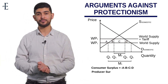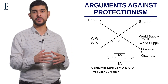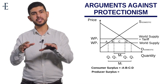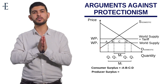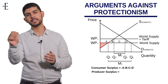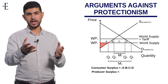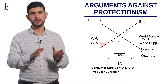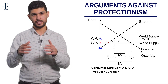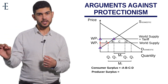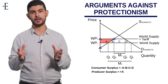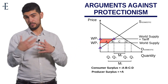Player two is the producer. Producer surplus is the difference between the minimum price they're willing to sell and the actual price they receive. Initially at WP1, the producer had a small triangle of surplus. When the government imposed the tariff, the minimum price hasn't changed, but the price they now receive is WP2, which is higher. So producer surplus has gone up by plus A.